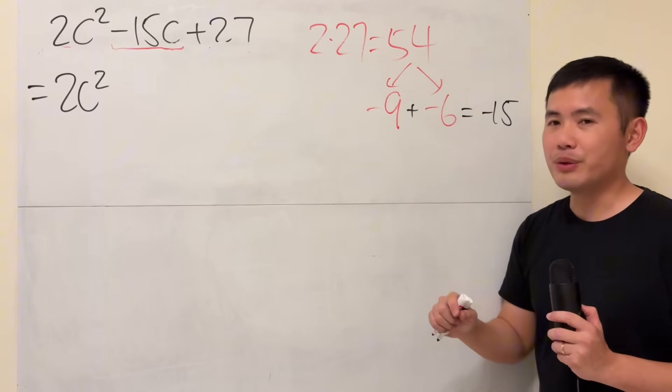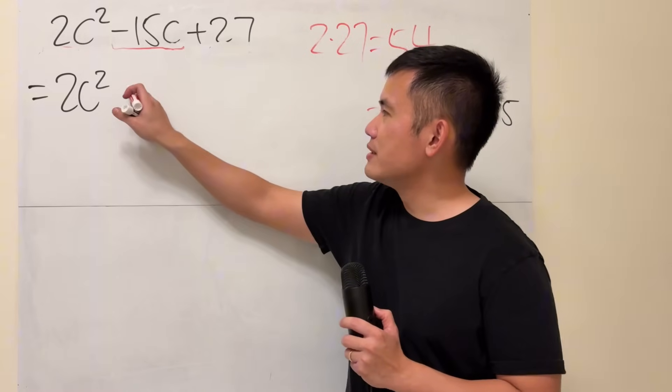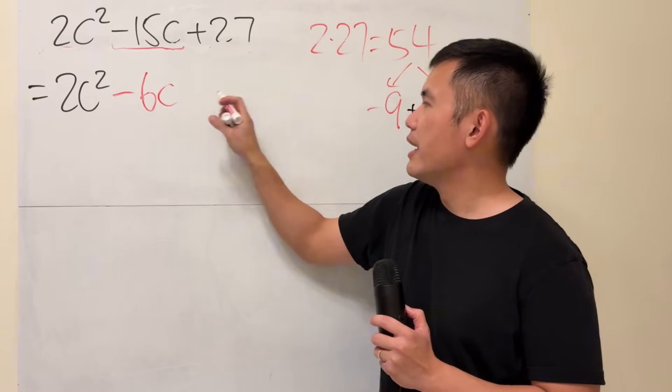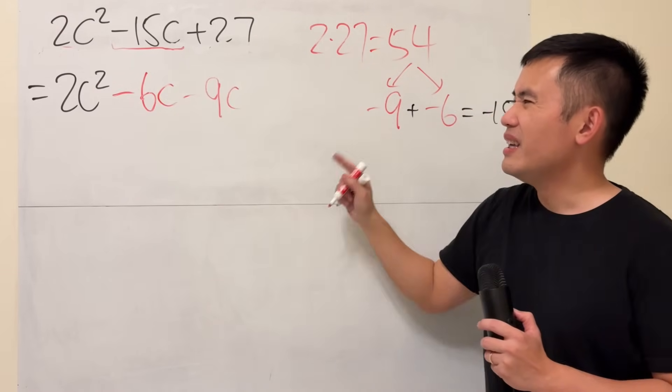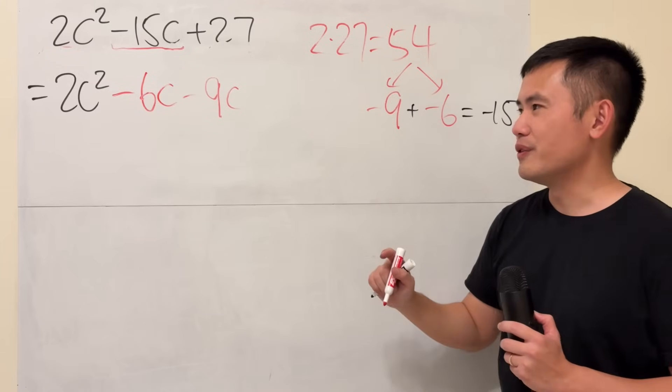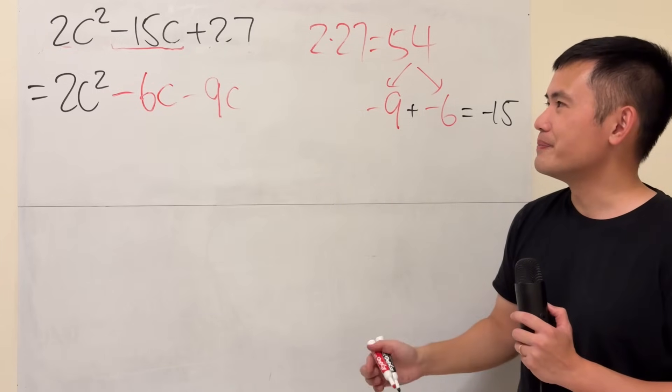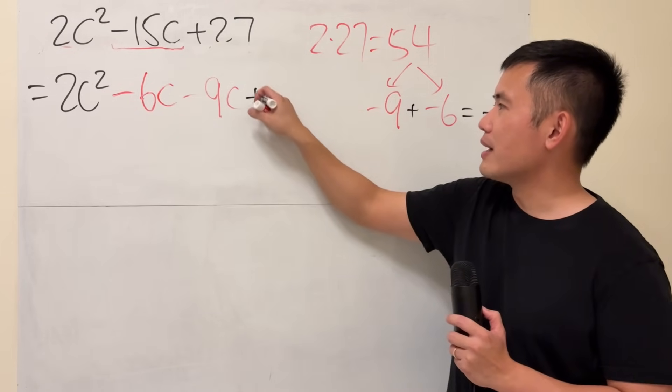I will do it the way that you did it. Right here, you broke this down as negative 6c, and then minus 9c. In this case, it will be slightly easier to factor in my opinion, so I will do that right here too. And then lastly, we have the plus 27.